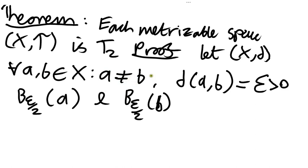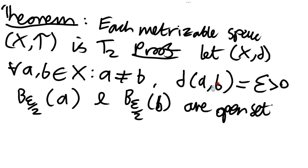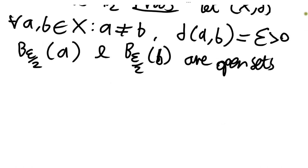These are going to be open sets — open balls with respect to a metric are always going to be open sets in the topology induced by that metric. All we have to do now is show that these two sets don't intersect. We're going to do that by contradiction. Suppose instead that these two open balls do intersect, so suppose there is a point c belonging to the epsilon over 2 ball around a and also the epsilon over 2 ball around b.